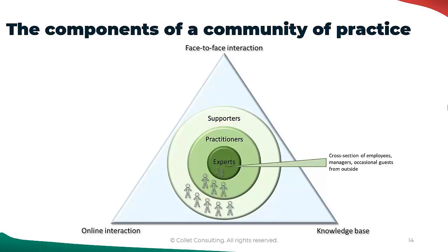Other than the people factor, the triangle of community of practice also has three axes. First, face-to-face interaction — in order to have a healthy community of practice, it's crucial to build trust among participants, which can be achieved much more effectively through face-to-face interaction, and it makes certain discussions much easier and clearer. The second axis is online interaction, which is more useful for spontaneous collaboration and rapid information diffusion among numerous participants. Then the third axis: the knowledge base.